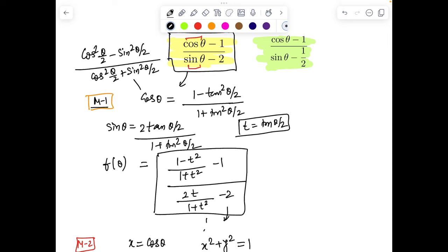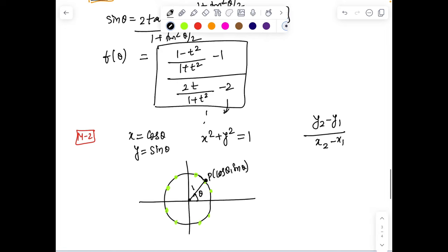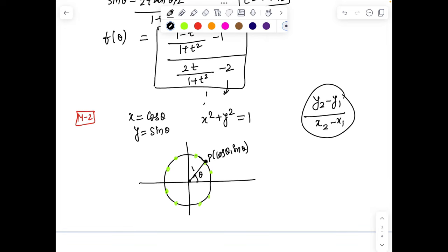(cos θ - 1)/(sin θ - 2) gives a feel of slope of a line: (y₂ - y₁)/(x₂ - x₁). We can write the given expression as precisely the slope of a line segment joining two points (cos θ, sin θ) and (1, 2).